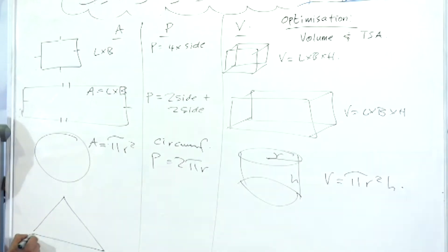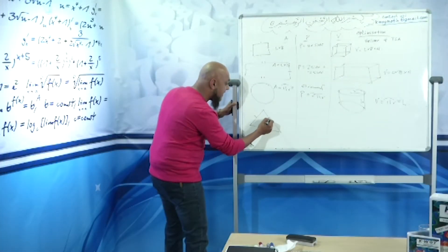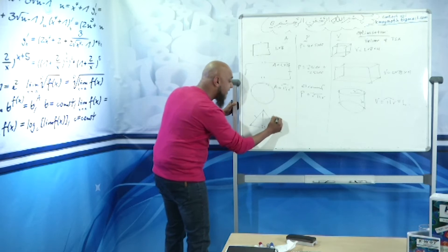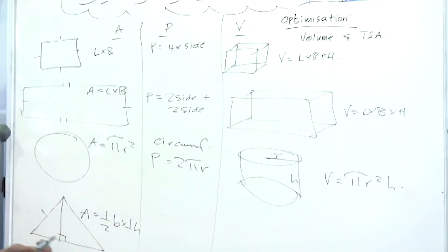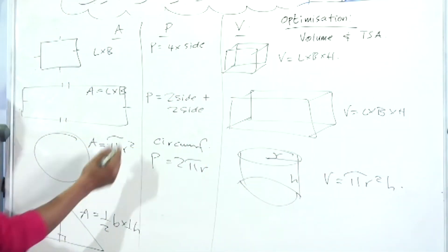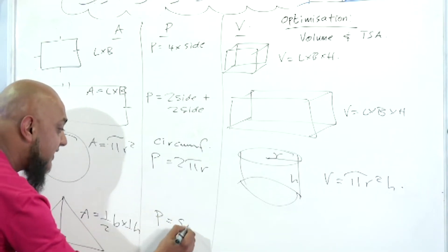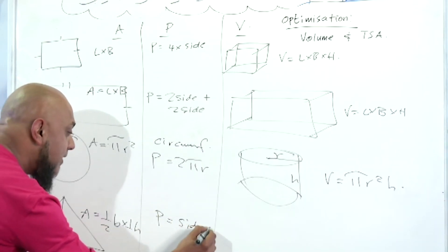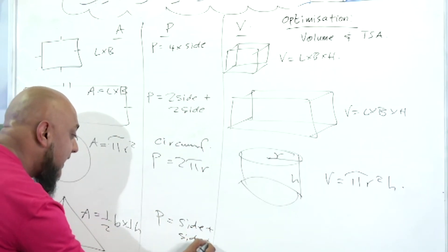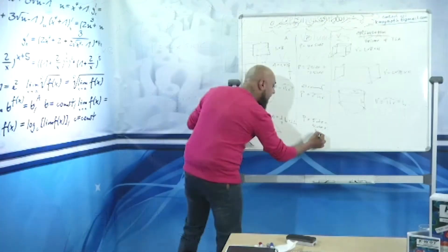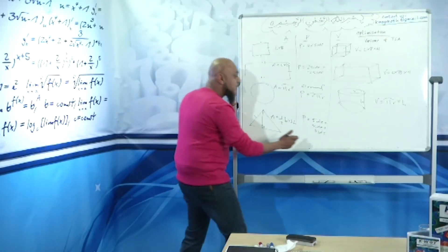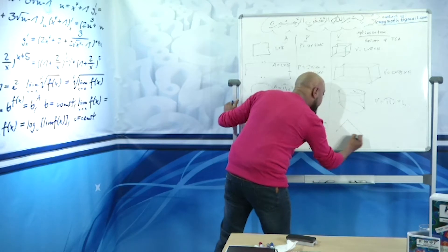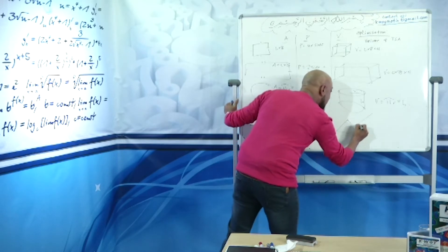This is a triangle. To calculate the area of a triangle: area is equal to half base times perpendicular height. We all know that the perimeter of a triangle is just side plus side plus side. Remember, perimeter is your distance around a shape.